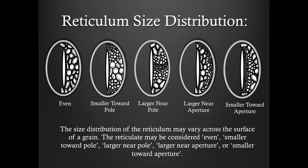which may be gradual or random throughout the surface of the grain. The size distribution of the reticulum may vary across the surface of the grain. The reticulate may be considered even, smaller toward pole, larger near pole, larger near aperture, or smaller toward aperture.